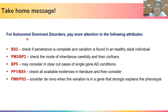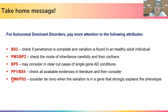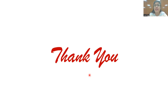Based on our discussion, the take-home message is that for autosomal dominant disorders, one should pay more attention to the following attributes. First, BS2: check if penetrance is complete and whether the variation is present in a healthy adult individual. Second, PM3 and BP2: check the mode of inheritance properly, then determine whether it is in cis or trans. Third, BP5: consider clear-cut cases of single-gene autosomal dominant conditions before assigning. Fourth, PP1 and BS4: check all available evidence in the literature before considering assignment. Finally, PM6 and PS2: consider de novo variation when the variant is in a gene that strongly explains the phenotype. I hope this session has clarified your doubts regarding the discussed attributes in autosomal dominant disorders. Thank you all for your attention.